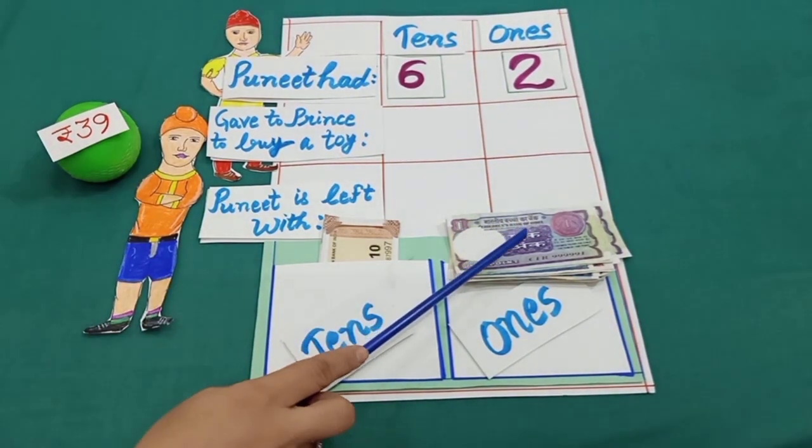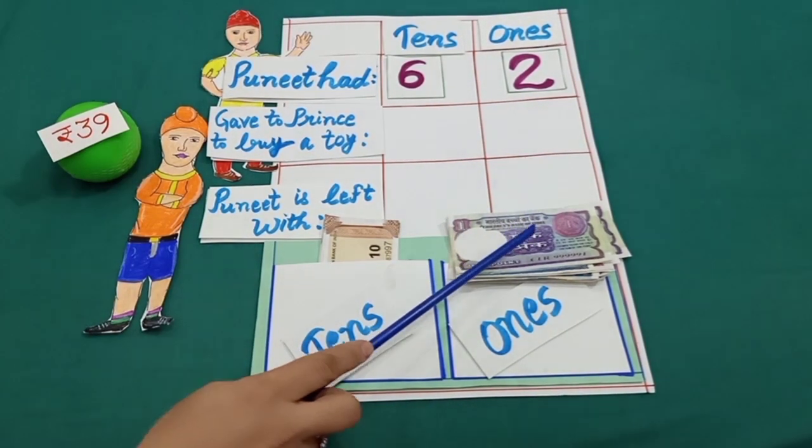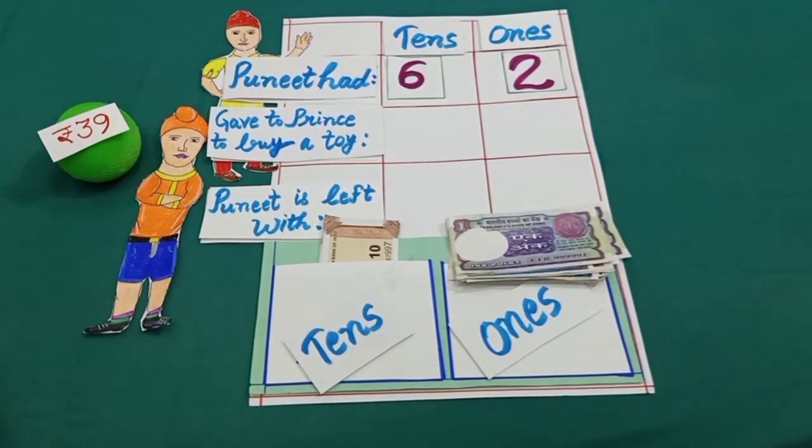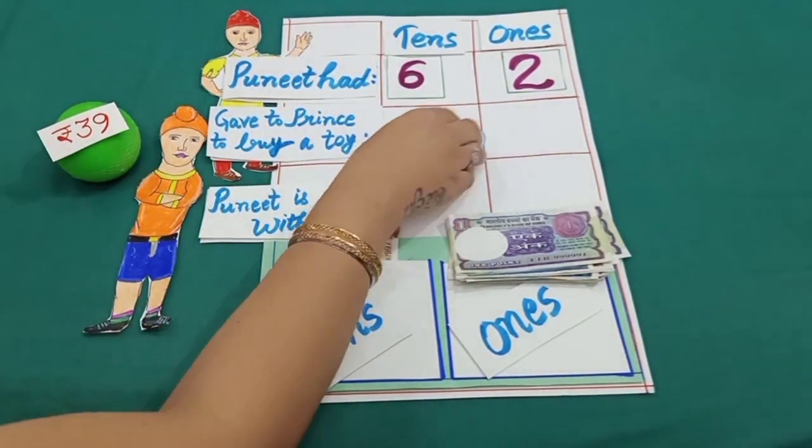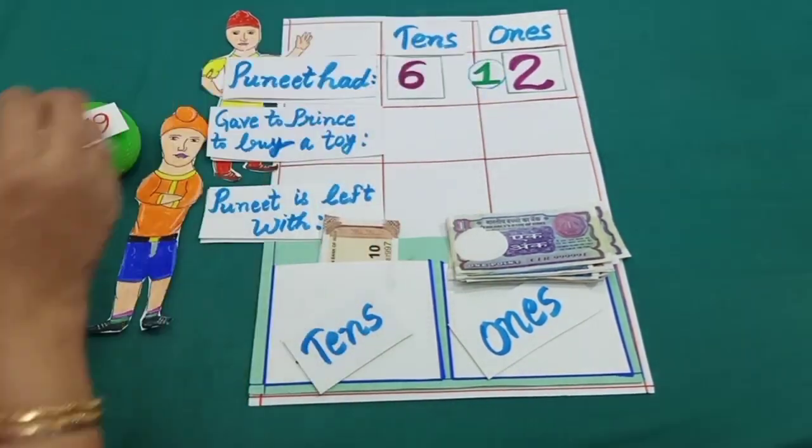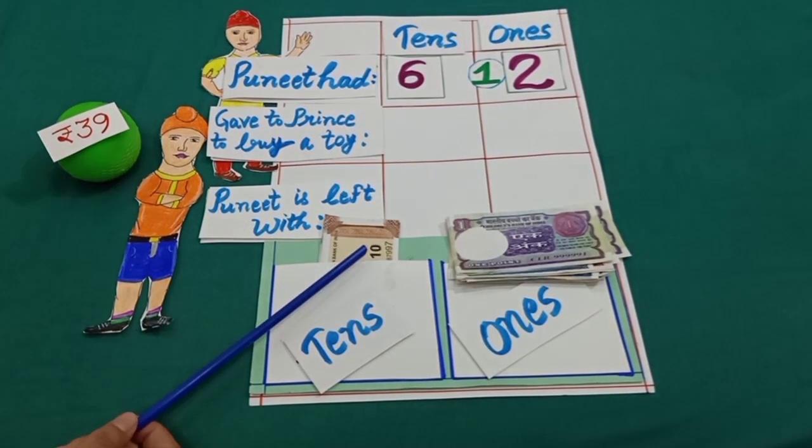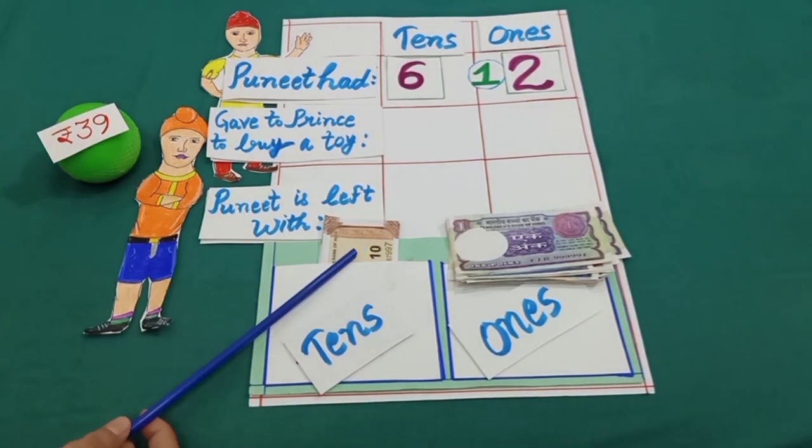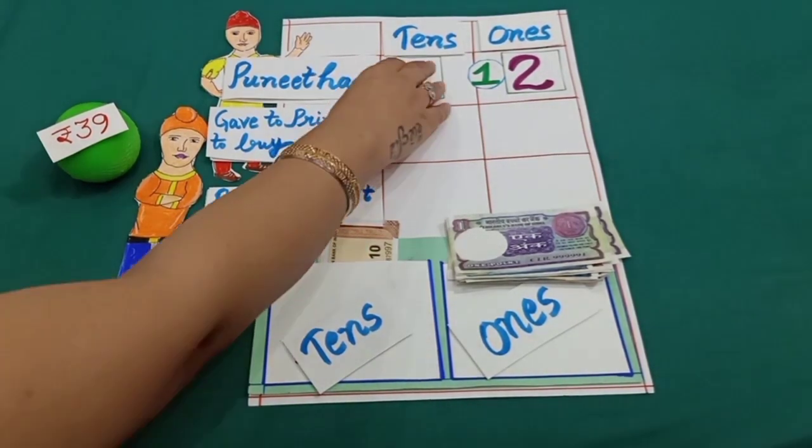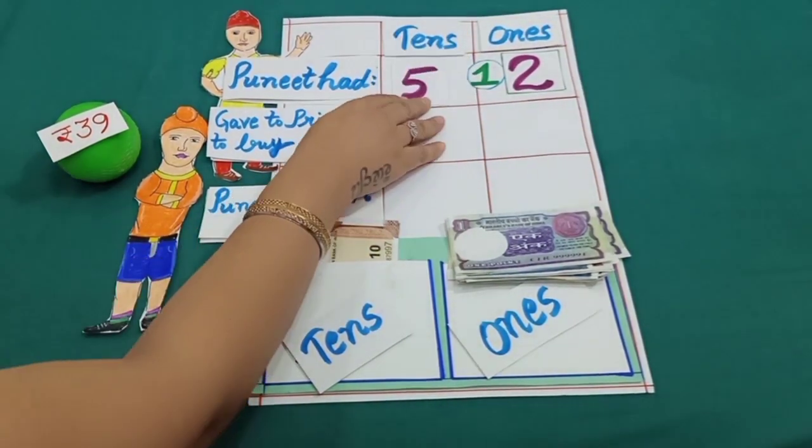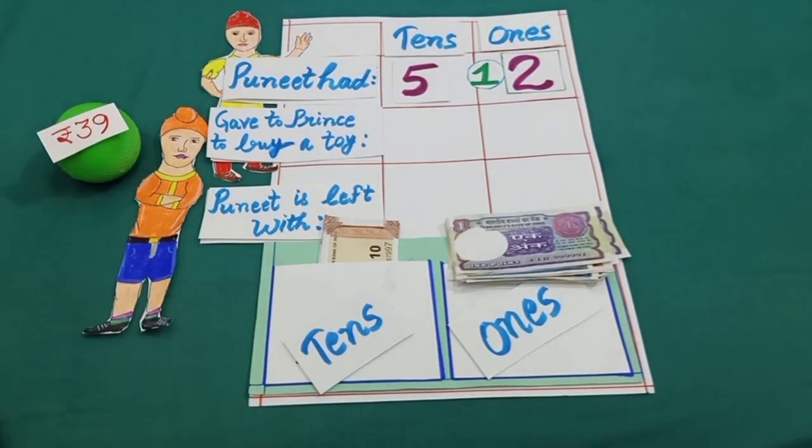Now Puneet is having 12 rupees, and 12 rupees is equal to 12 ones. And he is having 5 notes of 10. 5 tens means 50 rupees, and 50 rupees is equal to 5 tens.